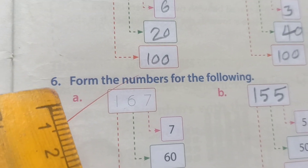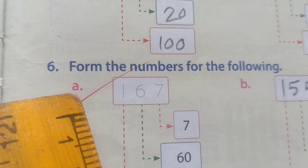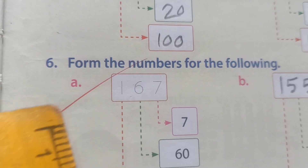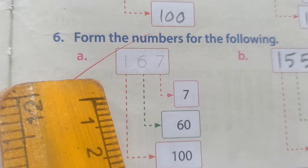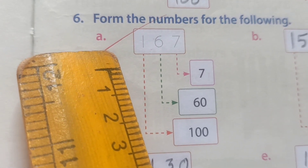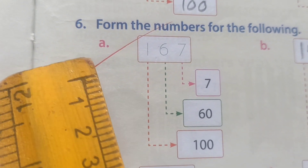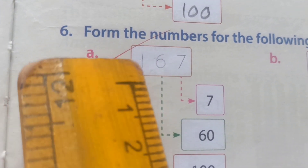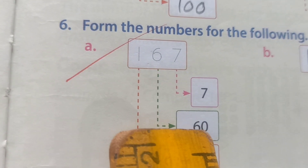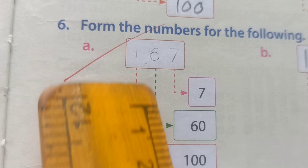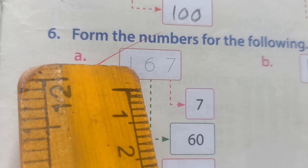Question number 6: Form the numbers for the following. First one, A — our textbook showing how to solve, very important for us. 167: 7 is ones position, 6 place value is 60 — 6 tens position. 1 is 100 position, so we write 100.